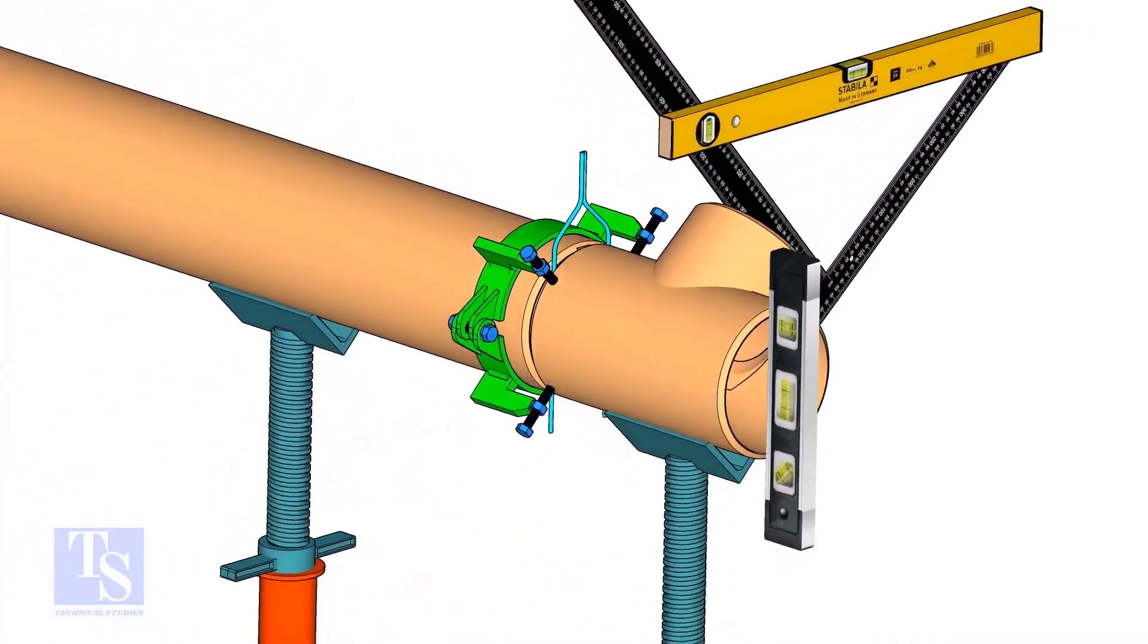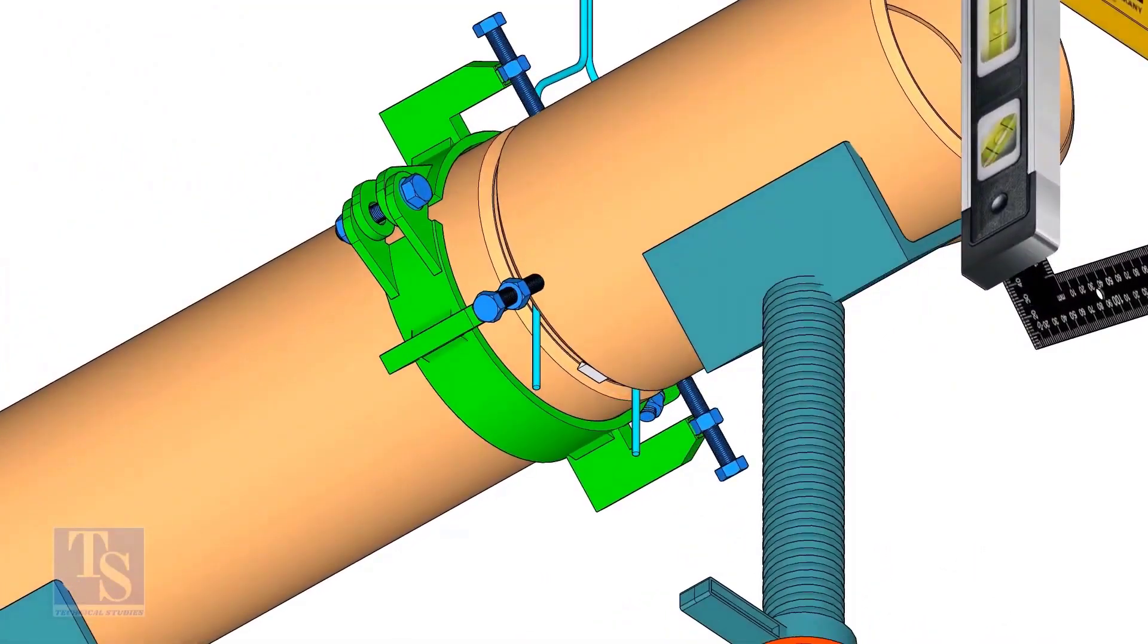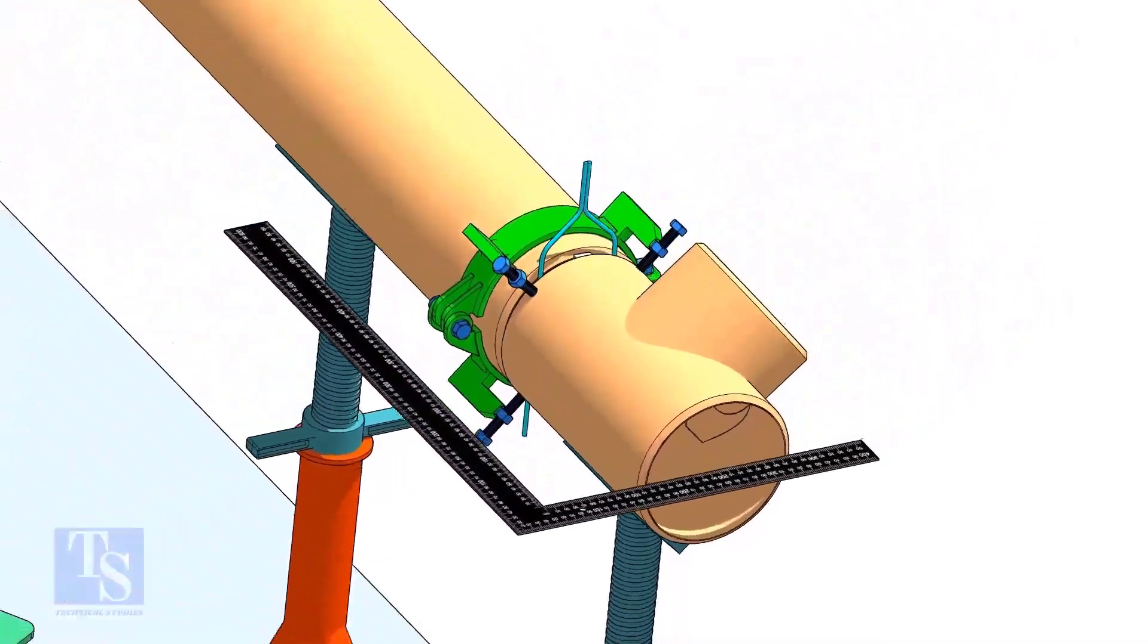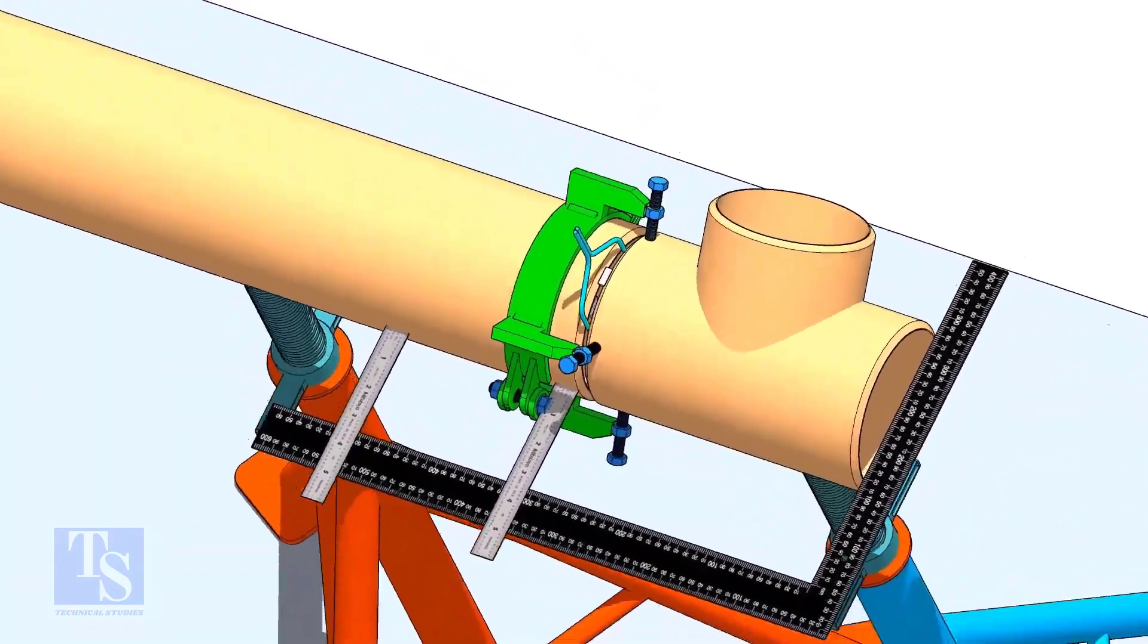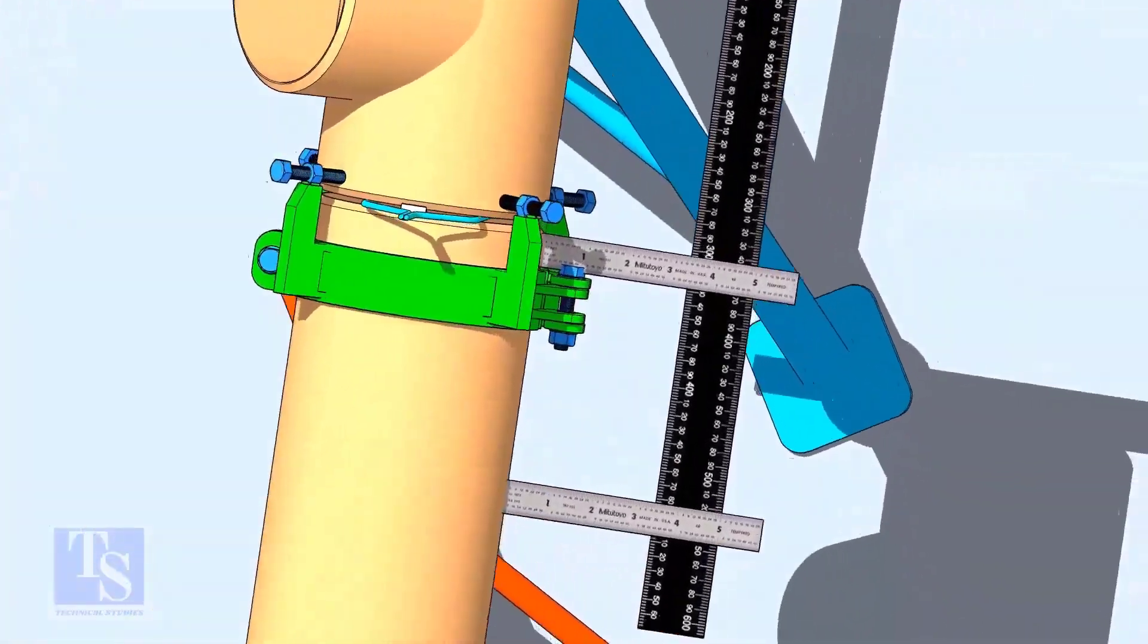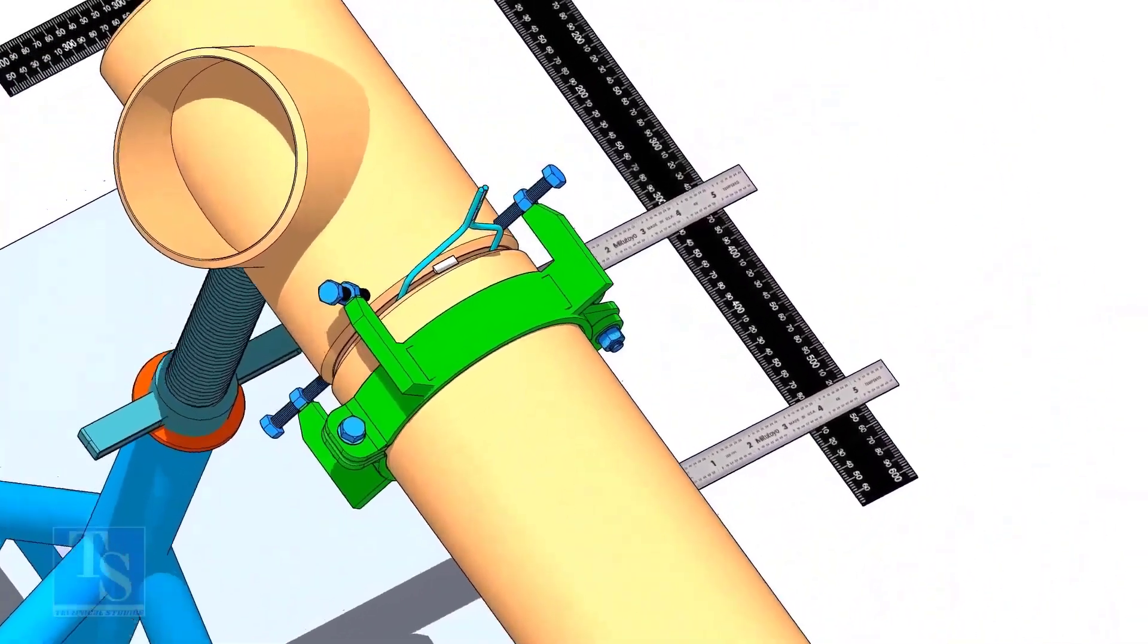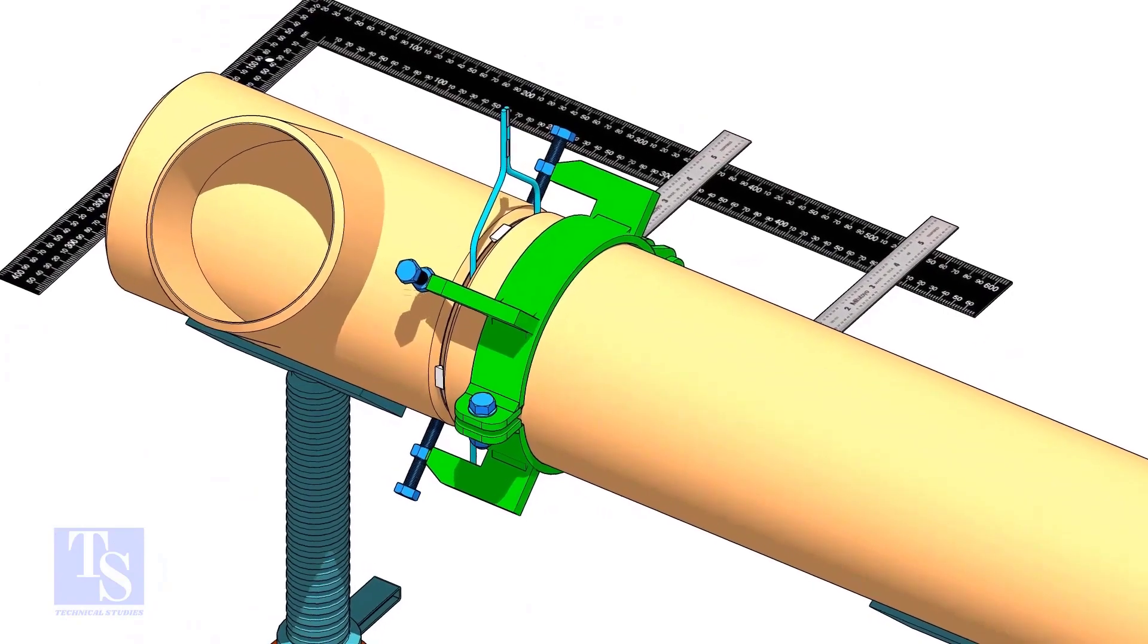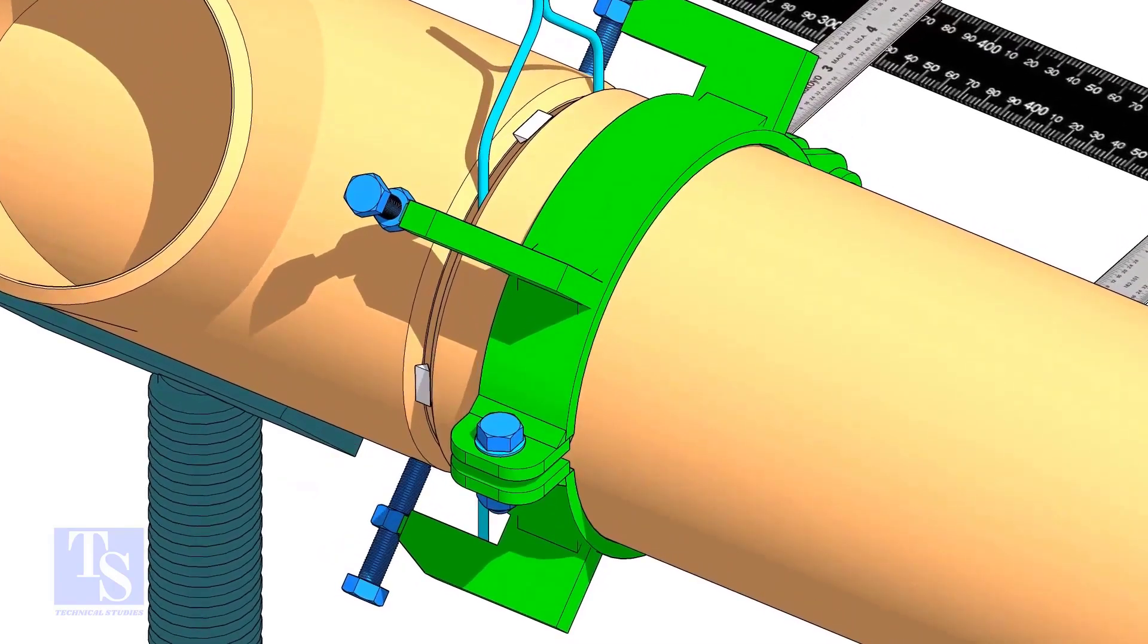Tack weld at the bottom side. Level the side of the T with the pipe, as shown. Now, tack weld on both sides of the joint.